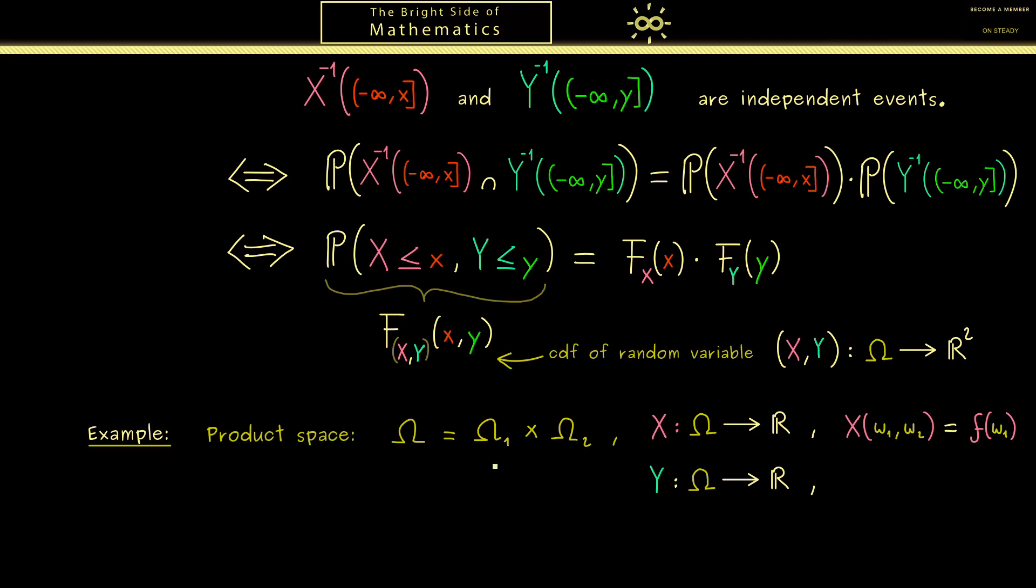So maybe here just think of a simple example when you throw two dice. Then omega_1 represents the first die so we have the numbers 1 to 6 and omega_2 represents the second die. In this case X could be the random variable that looks at the outcome of the first die, which means X of (omega_1, omega_2) is simply just omega_1. Then in the same way the random variable Y should look at the second die. Hence it does not care what the first input is. In other words we can write it as a function g of omega_2.